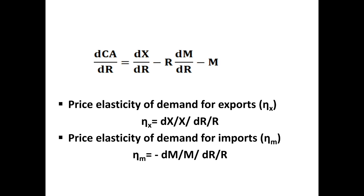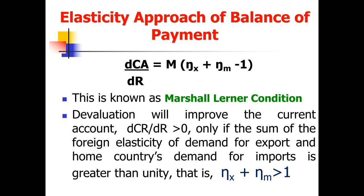Setting up the elasticity equations for dX and dM and substituting them into the above equation, we arrive at: dCA/dR = M·(ETA_X + ETA_M − 1). This equation is the celebrated Marshall-Lerner condition. It states that devaluation will improve the current account — that is, dCA/dR > 0 — if and only if the sum of the foreign elasticity of demand for exports and the home elasticity of demand for imports is greater than unity: ETA_X + ETA_M > 1. Only when the sum of the two elasticities exceeds 1 will devaluation lead to an improvement in the current account.